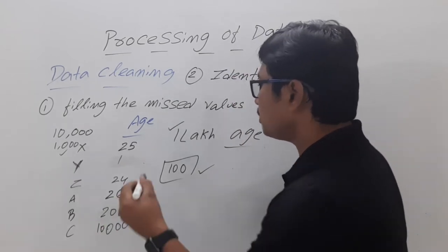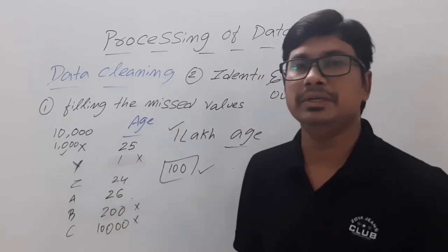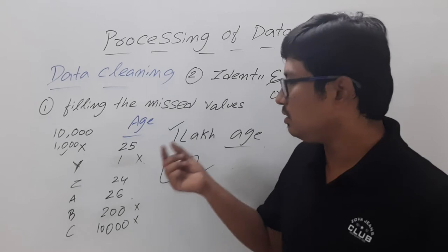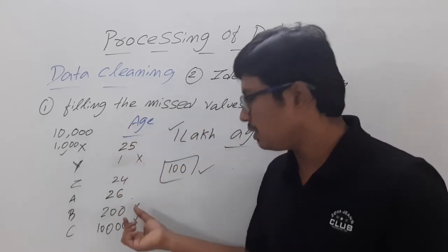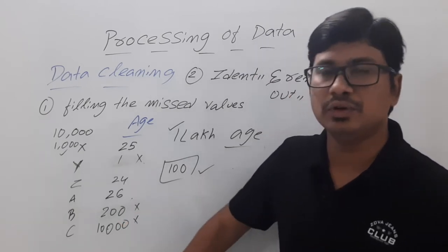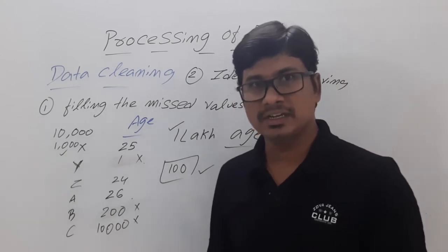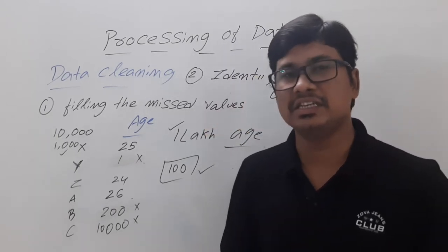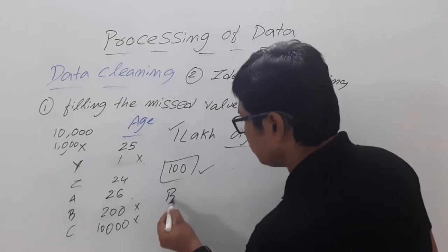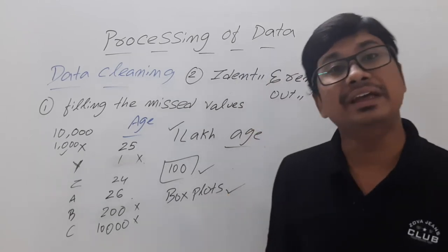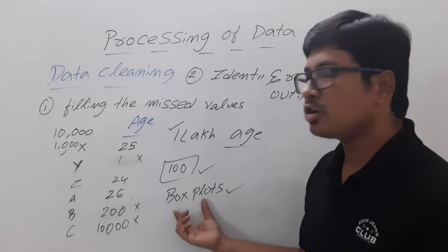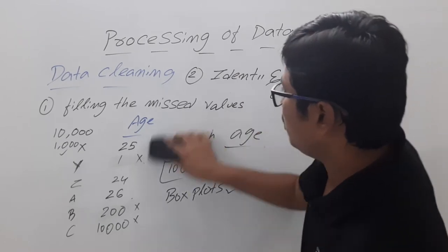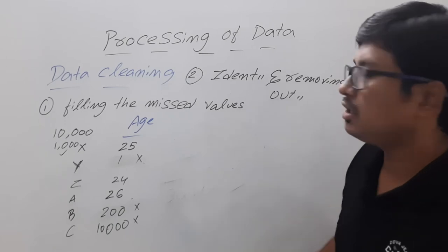So you need to remove these outliers. You might say we are identifying them using common sense — a one-year-old cannot study MBA, a 200-year-old cannot exist. But we cannot always apply common sense; if we did, there would be no need for data science. So we use techniques such as box plots to identify outliers, and then we remove them. I will discuss how the box plot technique works in the coming lectures.